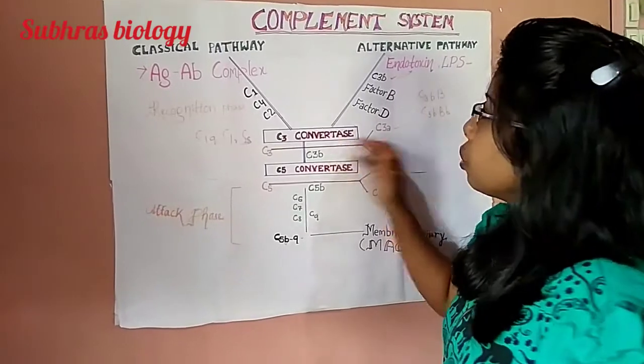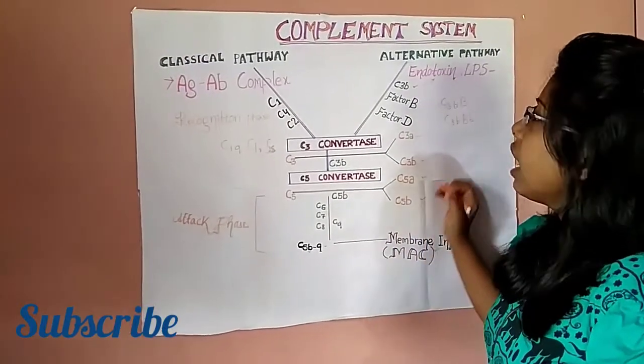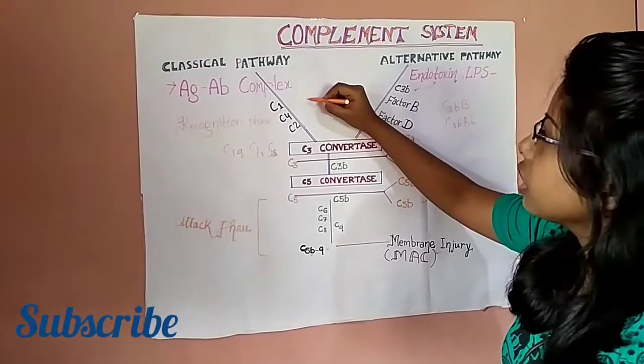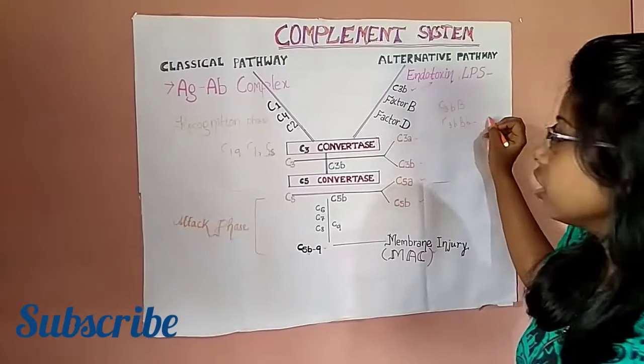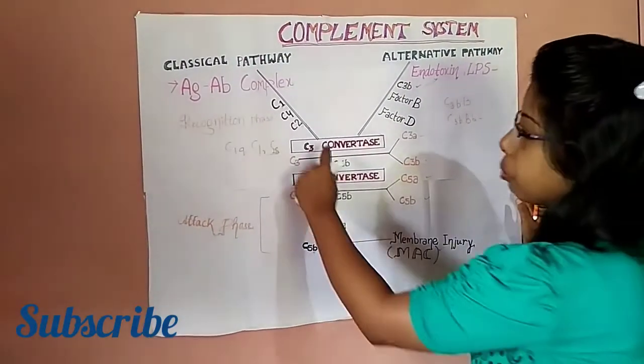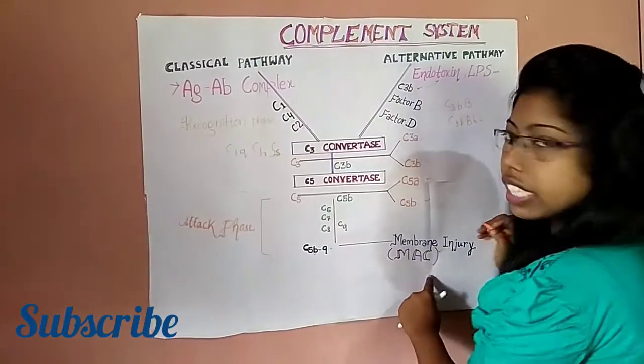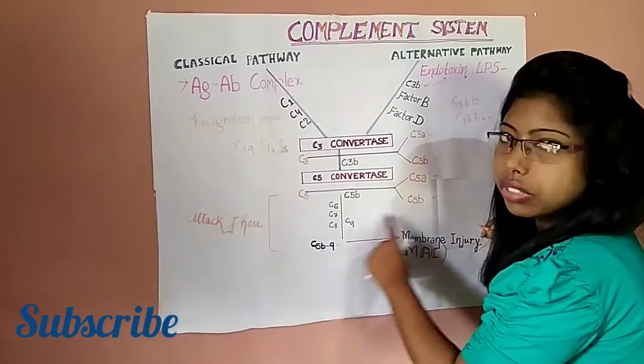So this is the two pathways of the complement system: the classical pathway and alternative pathway. But you have to remember, from C3 convertase to membrane attack complex, two pathways are the same, similar.